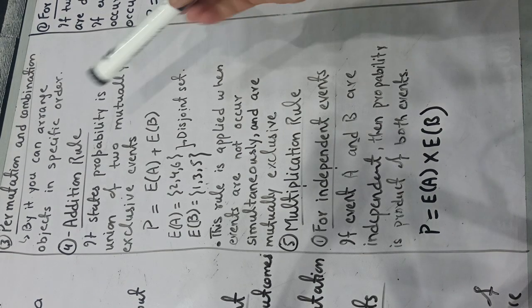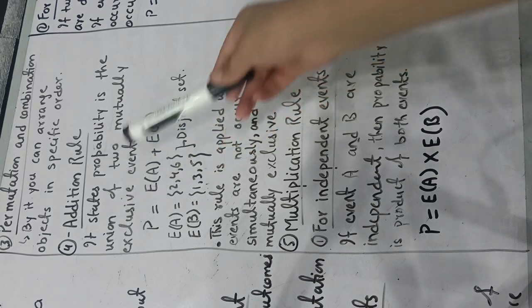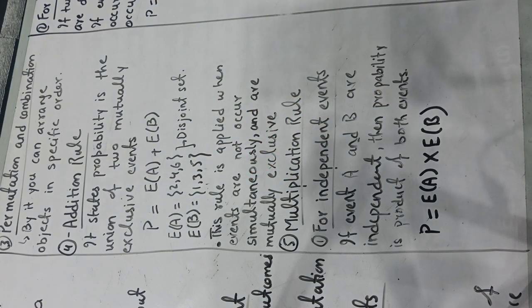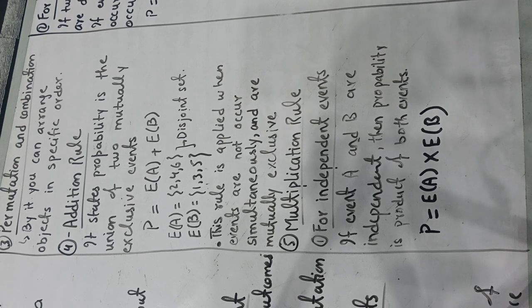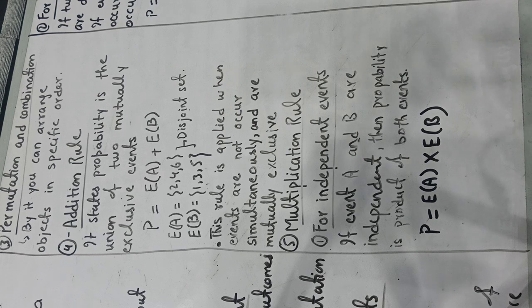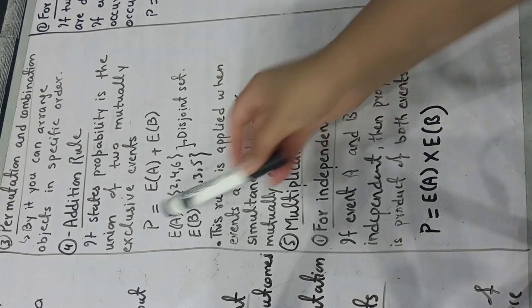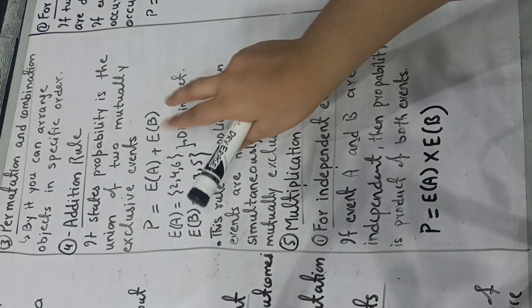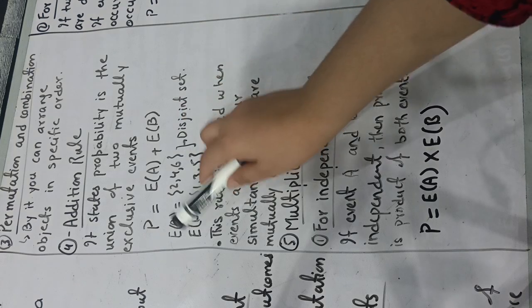The fourth rule is the addition rule. It states the probability is the union of two mutually exclusive events. These are the events which are not occurring simultaneously, meaning at the same time, so they have nothing common in them. The addition rule is probability of A union B equals event A plus event B.